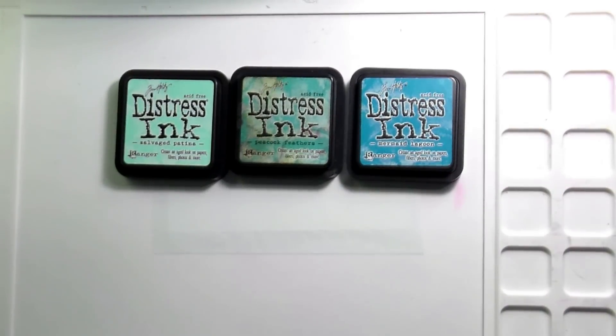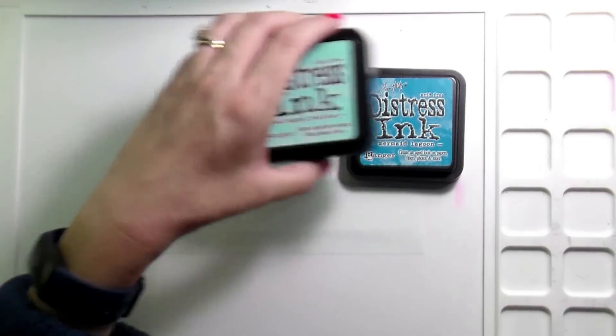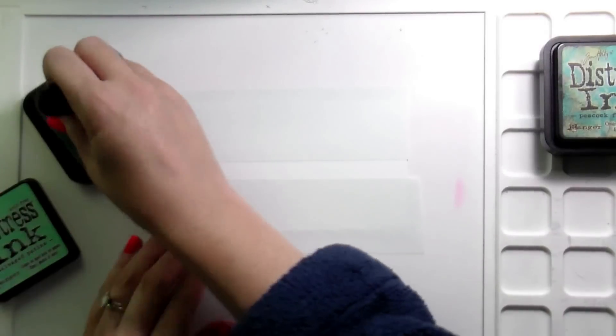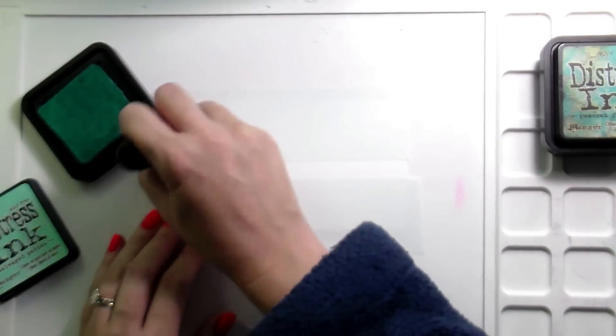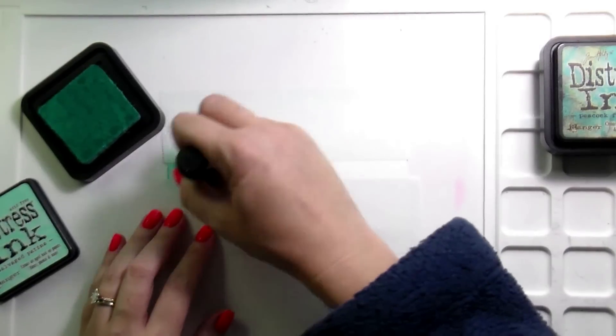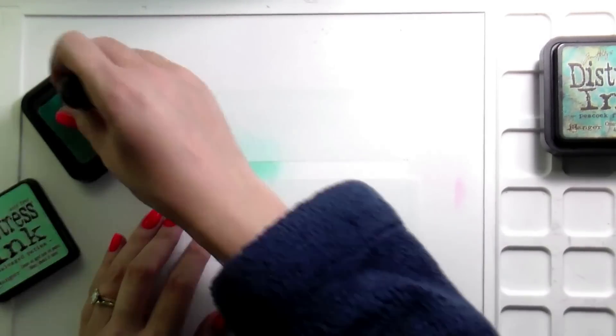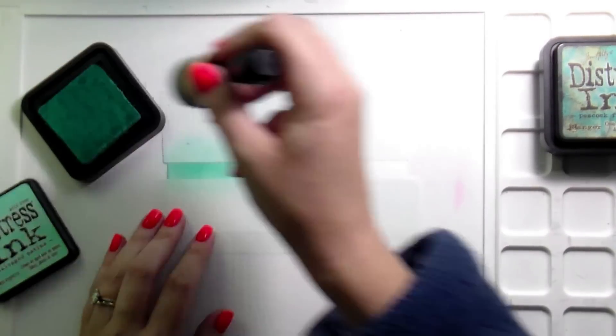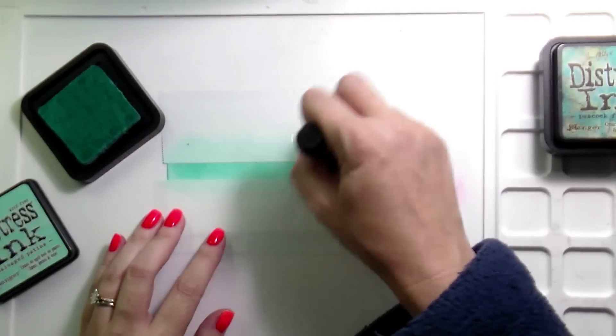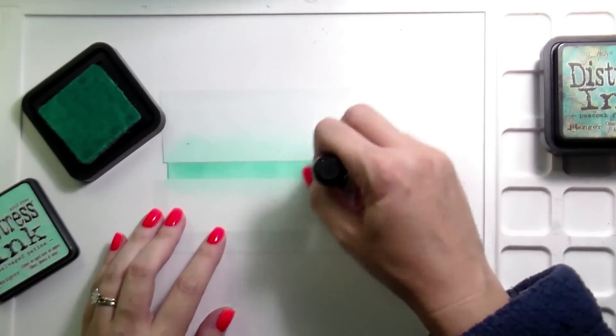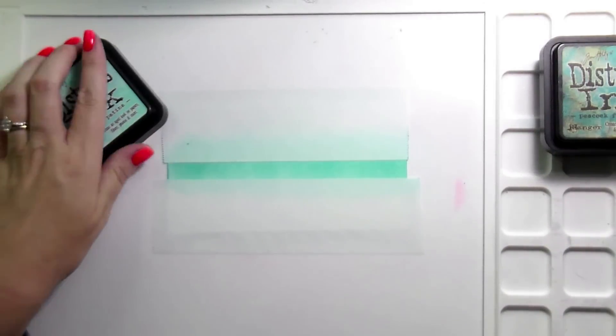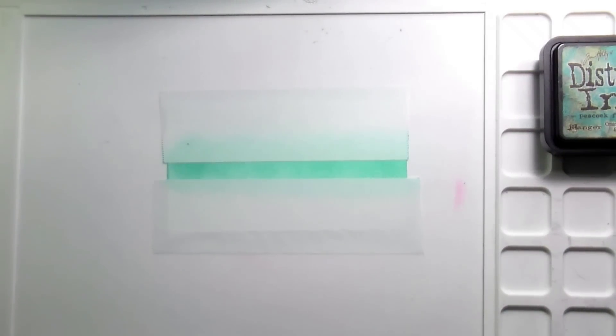In order to make sure that there was a difference between the blue of the water and the blue of the sky, I chose to go in a more teal direction. So I'm going to fill the whole thing in with salvage patina and then add a little bit of shading with peacock feathers and mermaid lagoon. Three colors was way too much, totally unnecessary, but I'm over the top and it is what it is. So sometimes you just have to know that about yourself and accept it and be fine with it.